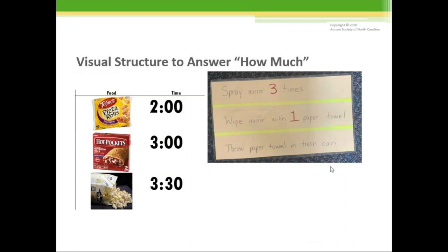Here's another example to show how much in daily living tasks. This is just a written task analysis for cleaning the mirror. I'm not sure about you all, but I've seen a lot of paper towels wasted during cleaning things like this. You rip them and you get them and you rip as many as you can off. Or you say spray, what if it just said spray mirror and I just sprayed it one time? That might not be enough for cleaning the actual mirror. So I like this example because it says spray mirror three times, wipe mirror with one paper towel. It tells you exactly how much to use.